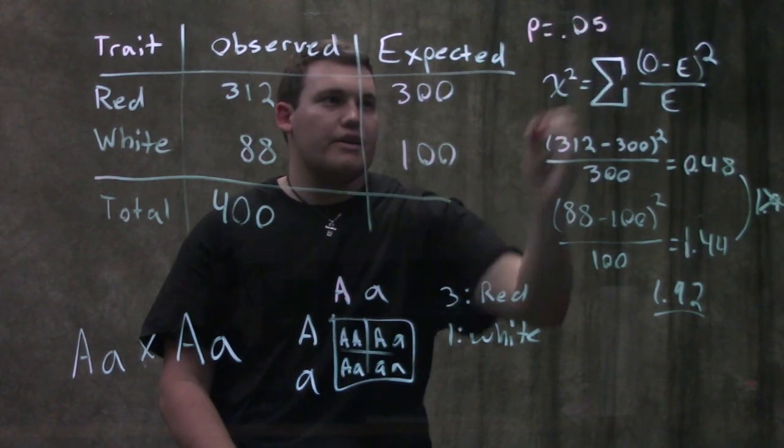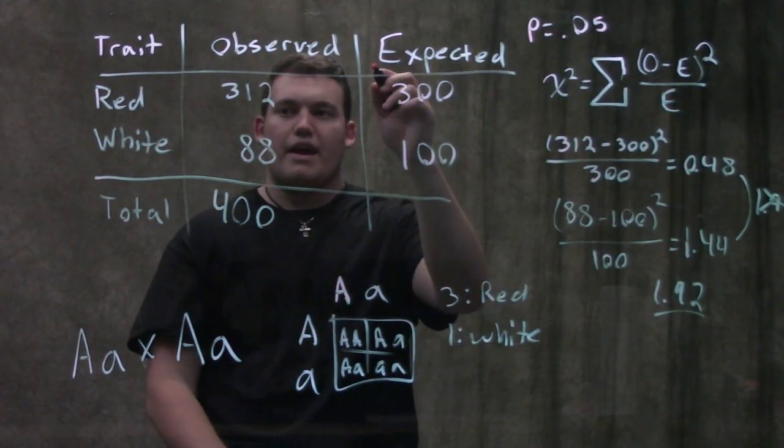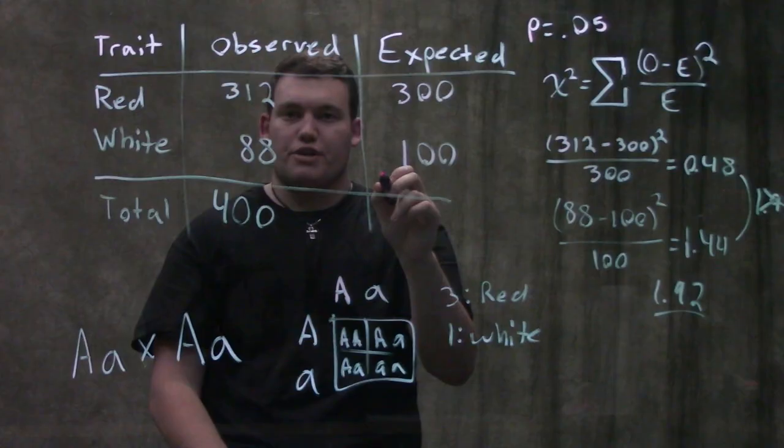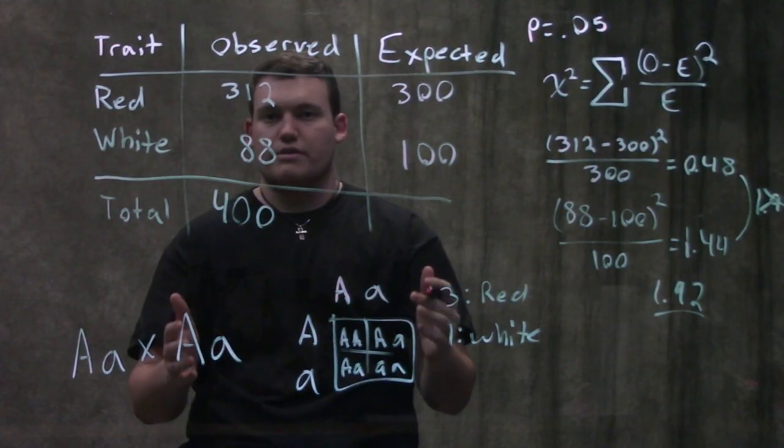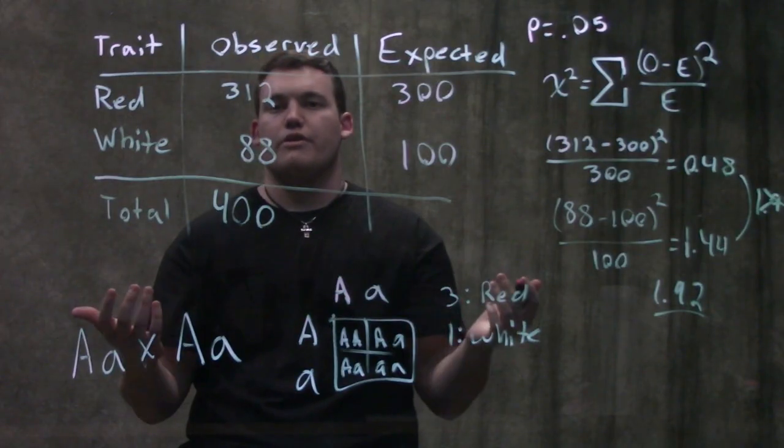So if our p equals 0.05 right there, then what we would do is we would go to 0.05 on the top and then I would go down and I would find my degrees of freedom. If you guys are looking at a chart that make this a ton easier, but I'm gonna go down to my degrees of freedom and you're like, what are the degrees of freedom?